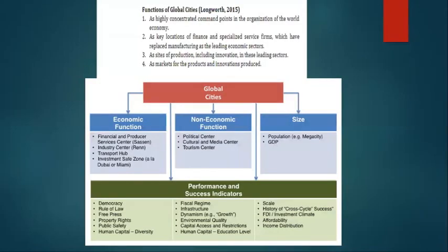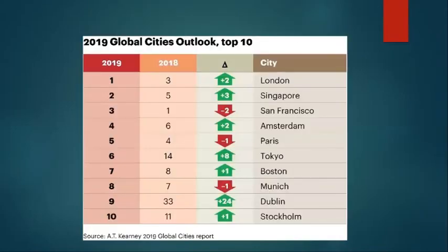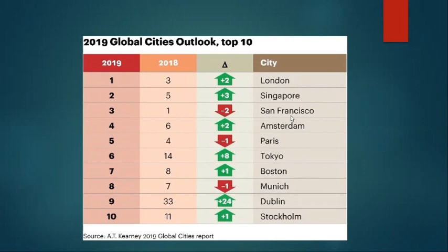These characteristics are observed in famous global cities such as New York, Tokyo, Singapore, and Seoul. According to the 2019 Global Cities Outlook, the top 10 cities are: London was number one, followed by Singapore, San Francisco, Amsterdam, Paris, Tokyo, Boston, Munich, Dublin, and Stockholm. In 2018, San Francisco was first and London, who used to be third, is first in 2019.